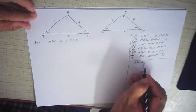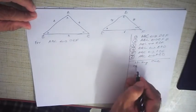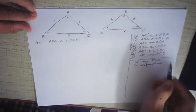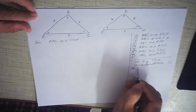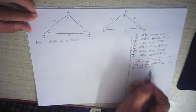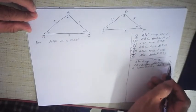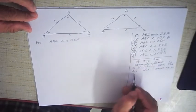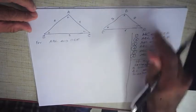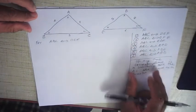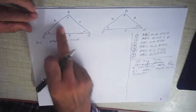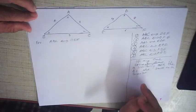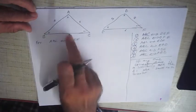If any one correspondence out of these six is a similarity, then the triangles are said to be similar. In other words, all 6 may not be similar. If only one set of correspondence is similar — for example, in this case ABC↔DEF — if any one correspondence is a similarity, then the triangles are said to be similar, but for that given correspondence only.